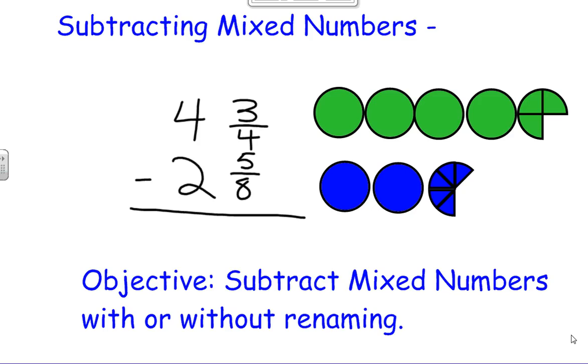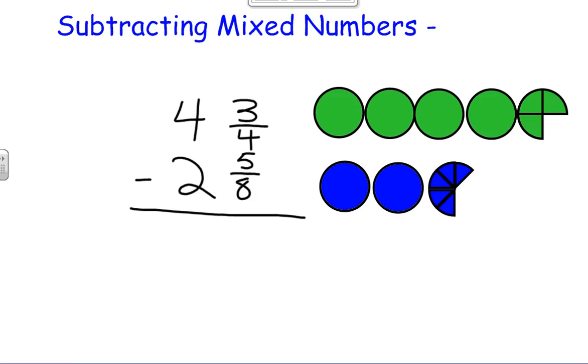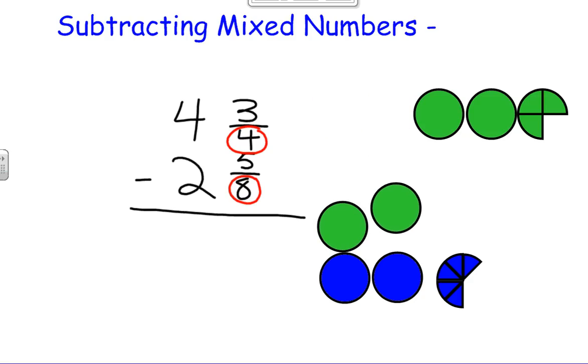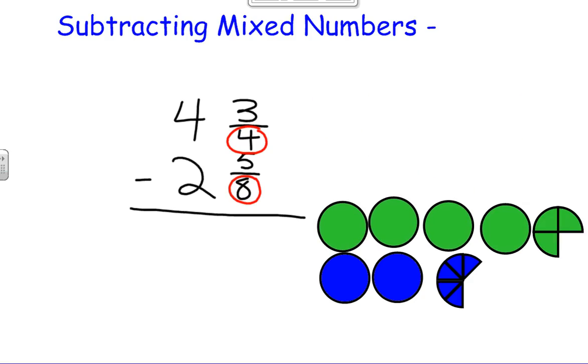So when we look at this first problem, we can see that we have 4 and 3 fourths, and I drew the shapes over to the side. Let me get rid of the objective here. All right, 4 and 3 fourths minus 2 and 5 eighths. The first thing that we want to do is convert to a common denominator. So when we see eighths and fourths, we're going to want to convert them into the least common multiple of those two denominators, which we should know is 8. Moving the shapes out of the way so we can show the work off to the side.